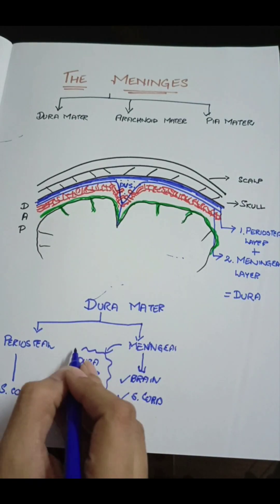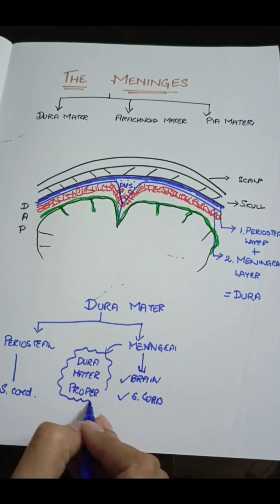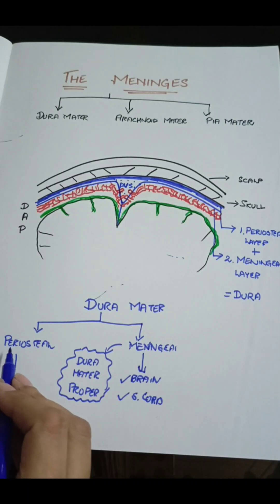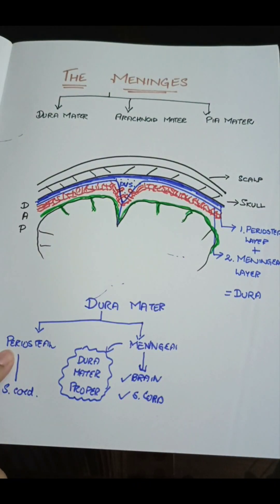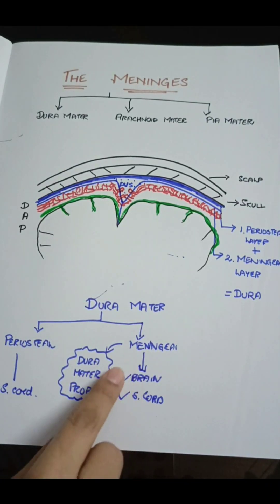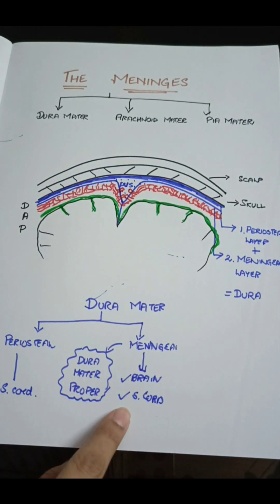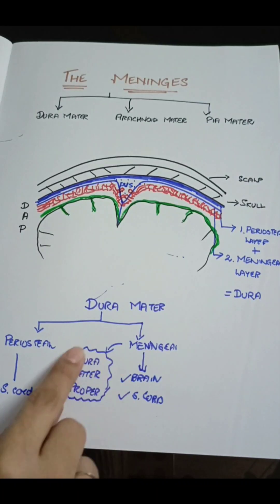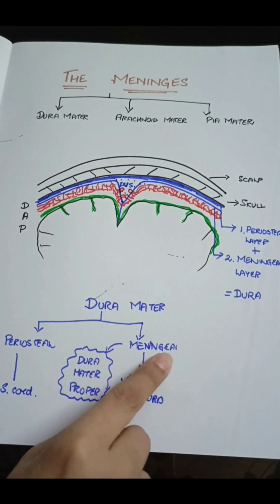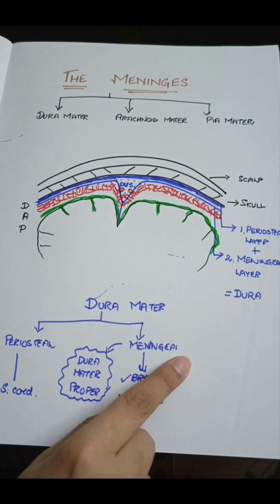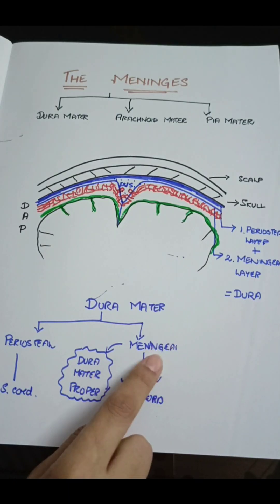The meningeal layer is known as the dura mater proper. Another name for the periosteal layer is the endosteum. This layer is adherent at the sites of the sutures of the skull bones and also at the base of the skull. The meningeal layer, which invests the brain and spinal cord, is the true dura mater, and this layer sends sleeves to the cranial nerves which exit the brain area.